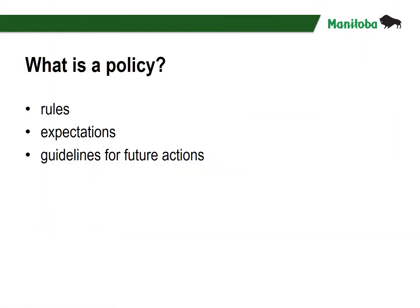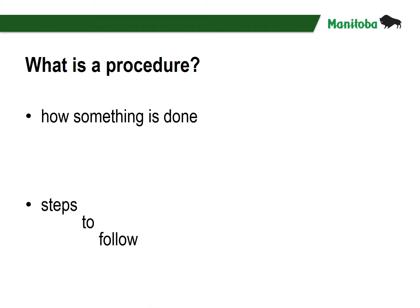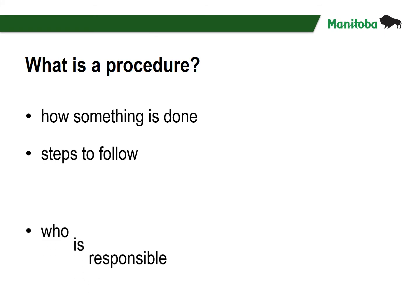Let us start with definitions. What is a policy? Policies are the rules, expectations, and guidelines for future actions. The Ontario Ministry of Agriculture, Food, and Rural Affairs fact sheet, Developing Policies and Procedures for Volunteer Organizations, simply states that policies are written statements that tell people what to do. What is a procedure? Procedures clarify how something is done, steps to follow, and who is responsible.